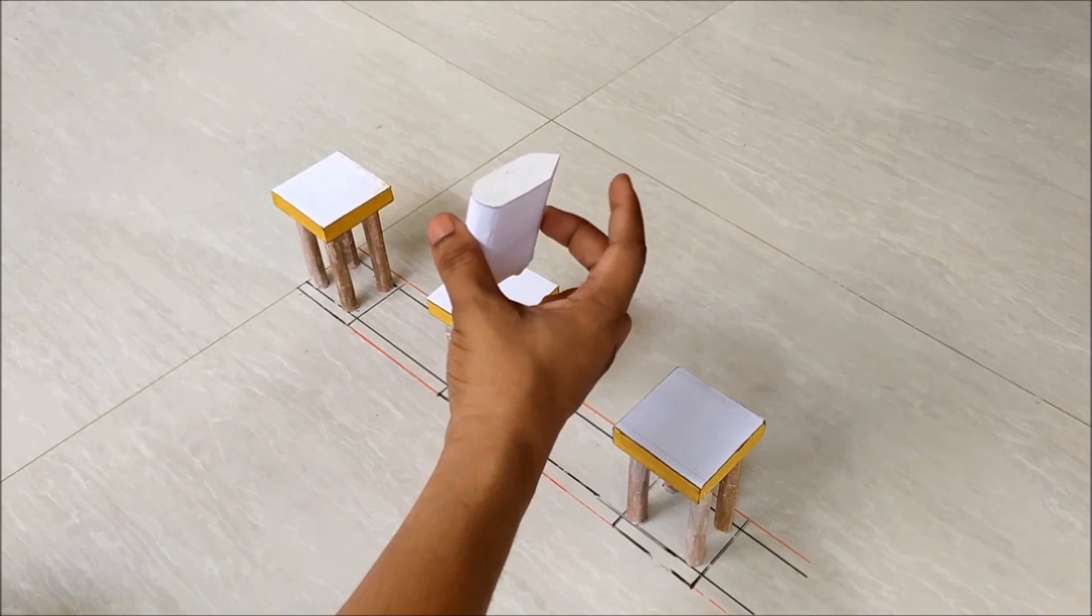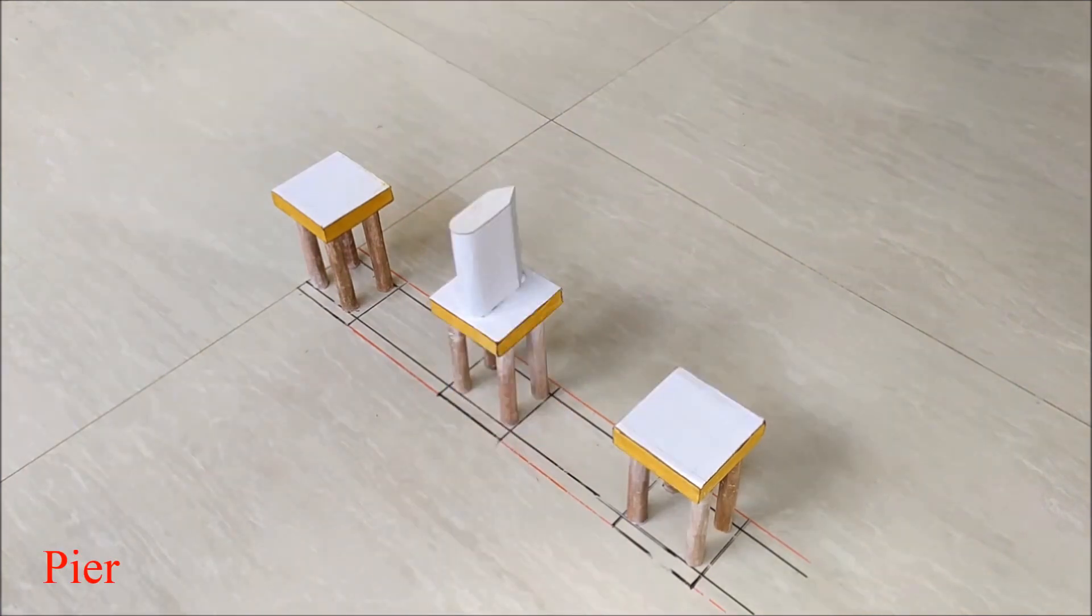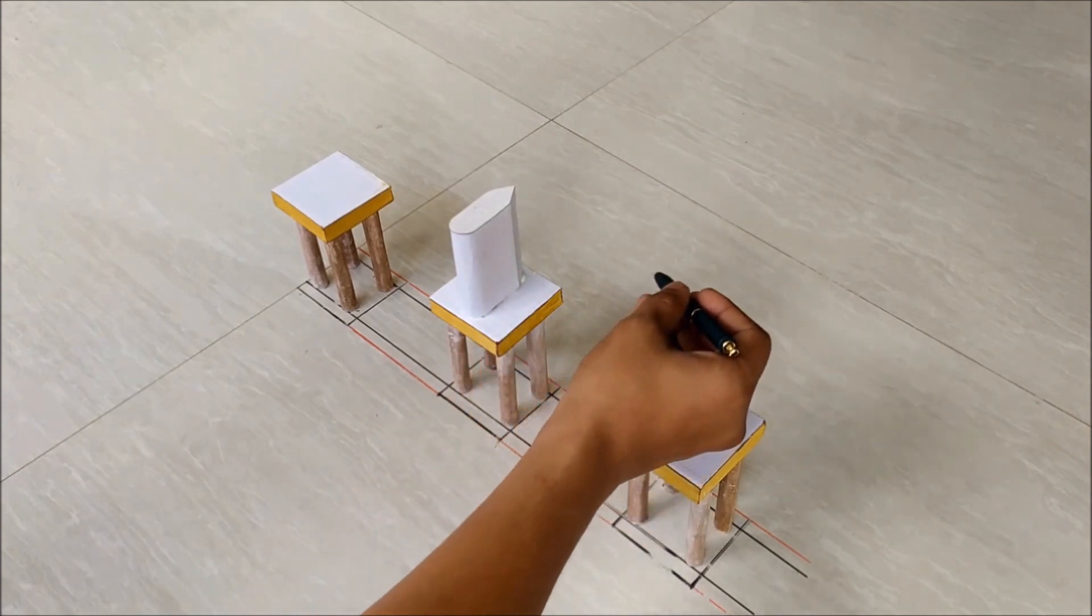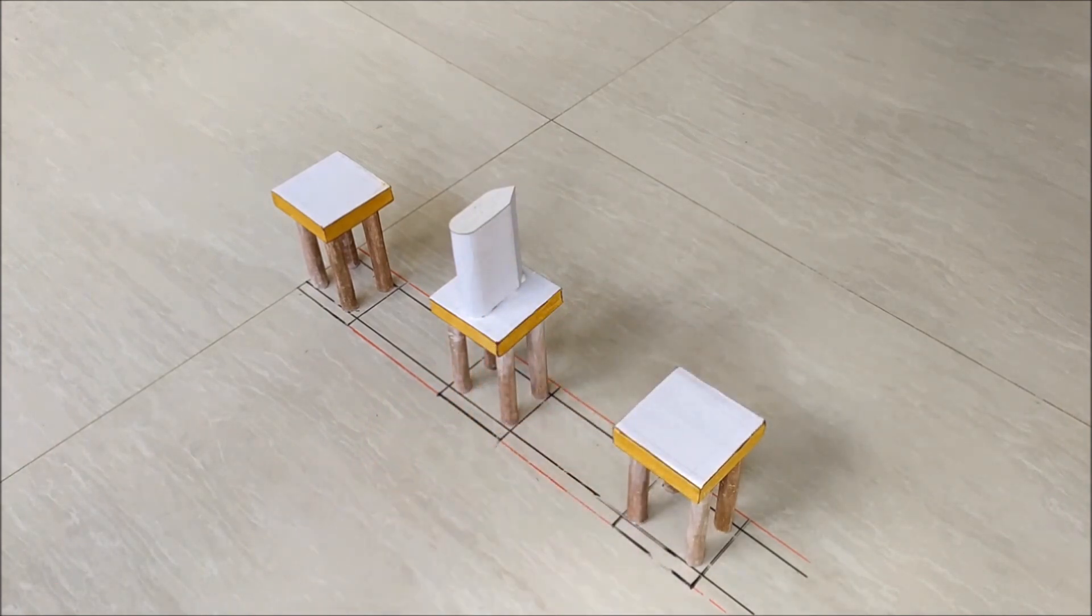This is a compression member of bridge called a pier. Pier is a raised intermediate support of bridge structure that rises above the body of water and usually provides above water access for both passengers and cargo.